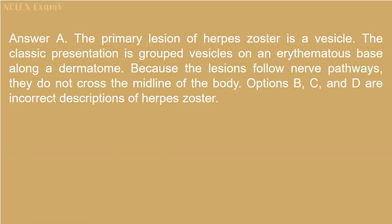Answer A. The primary lesion of herpes zoster is a vesicle. The classic presentation is grouped vesicles on an erythematous base along a dermatome. Because the lesions follow nerve pathways, they do not cross the midline of the body. Options B, C, and D are incorrect descriptions of herpes zoster.